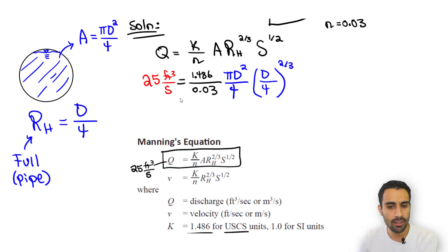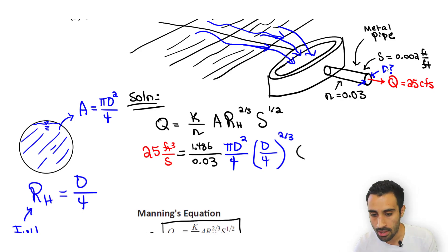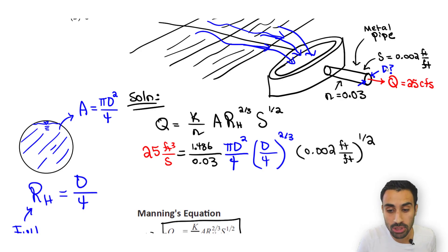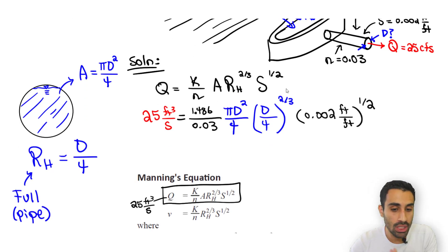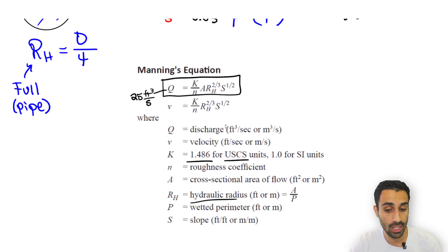Notice the D value is the pipe size we want to find. The slope value given in the problem is 0.002 feet per foot, raised to the 1/2 power. Now we have everything plugged in and our only unknown is D, the diameter. When we solve this, we get D in units of feet, so we'll be set. Note: on the actual FE exam, be careful — convert to inches at the end if they ask for that.